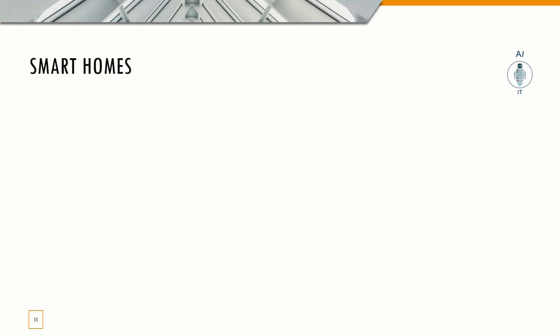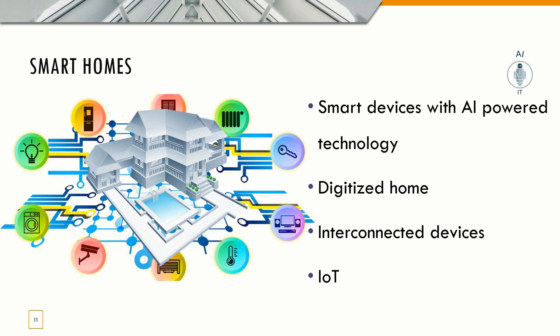When everything in the city is smart, what about our homes? A smart home is one that has smart devices along with AI-powered technology to provide new possibilities. It is a digitized home with technologies like Internet of Things and Artificial Intelligence. It is made up of devices like a smart washing machine, smart lights, smart speakers, smart cameras, smart TVs, and smart robotic cleaners that one can communicate with and operate from distant places using a simple mobile application.